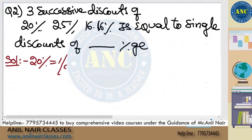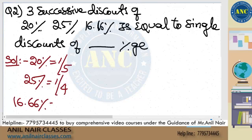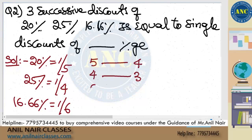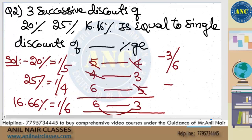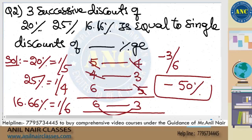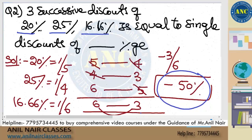20% is 1/5, 25% is 1/4, and 16.67% is 1/6. Discount means losing money: on 5, lose 1 — final value 4; on 4, lose 1 — final value 3; on 6, lose 1 — final value 5. Multiplying: 4 cancels, 5 cancels, 6 becomes 3. So 6 has become 3 — a decrease of 3 on 6, which is 50%. Three successive discounts of 20%, 25%, and 16.67% is equivalent to a single discount of 50%.